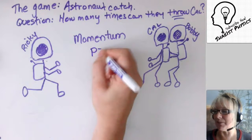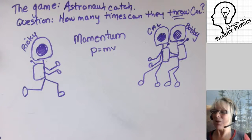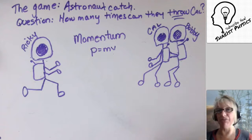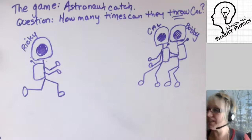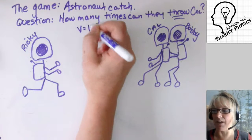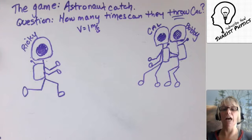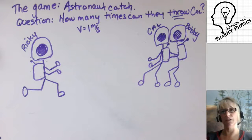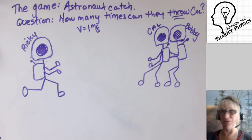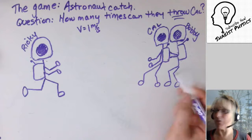We know that momentum is equal to mass times velocity, and we use the letter P to stand for momentum. We are going to analyze the different velocities. What we know about this problem is that Ricky and Bobby are both able to throw Cal with a velocity of one meter per second — so every time they throw Cal, they move him away from them at one meter per second. Because we're in outer space, he's going to continue at that velocity until he reaches the other astronaut.